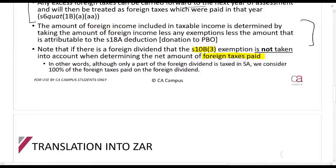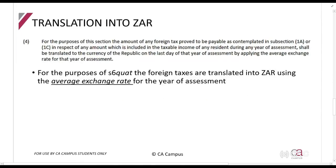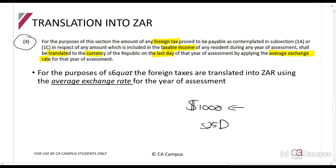If you paid foreign tax in a foreign currency, such as a thousand dollars, you need to translate that into rands. While Section 25D generally governs foreign transaction translation, Section 6quat has a specific rule: the amount of any foreign tax proved to be payable shall be translated to the currency of the Republic on the last day of the year by applying the average exchange rate for that year of assessment. Be careful - we are very used to applying the spot rate, but for Section 6quat you must apply the average exchange rate.